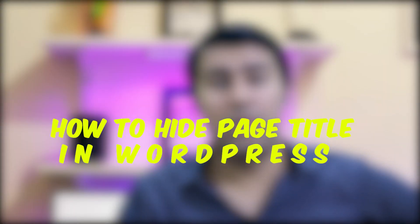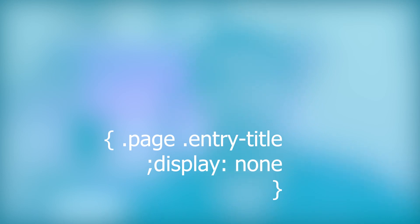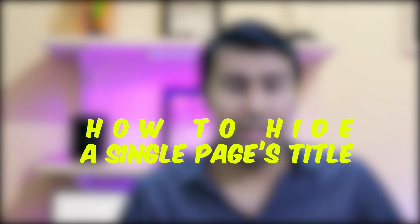How to hide page titles in WordPress? Perhaps your objective is not to eradicate all your page titles — what if your aim is solely to conceal the titles of pages but not posts? In such a scenario, a minor adjustment to the above CSS code is all it takes. Simply add .page to the code, and this will immediately hide all page titles on your WordPress site.